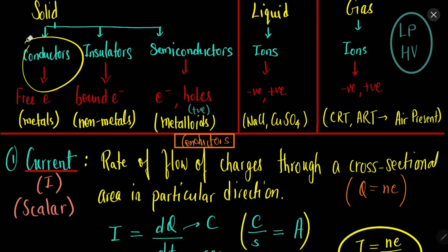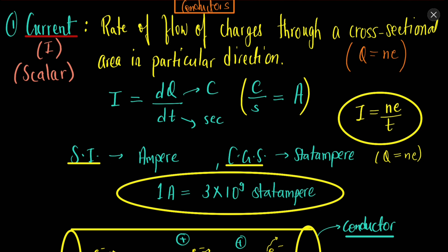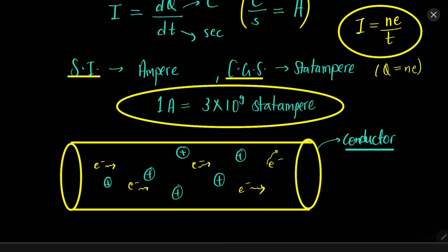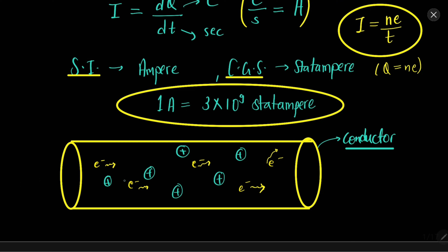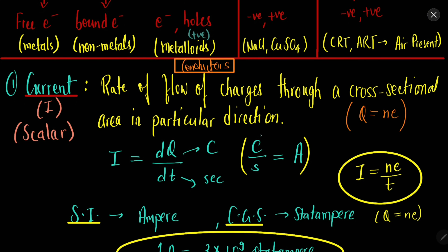In this chapter we will mainly focus on conductors. Current is quite simple to understand — it is the rate of flow of charges through a cross section in a particular direction. If we have a wire and consider a region, the rate of flow of electrons through this region per second is called current. More electrons flowing per second means more current. Current is a scalar quantity.